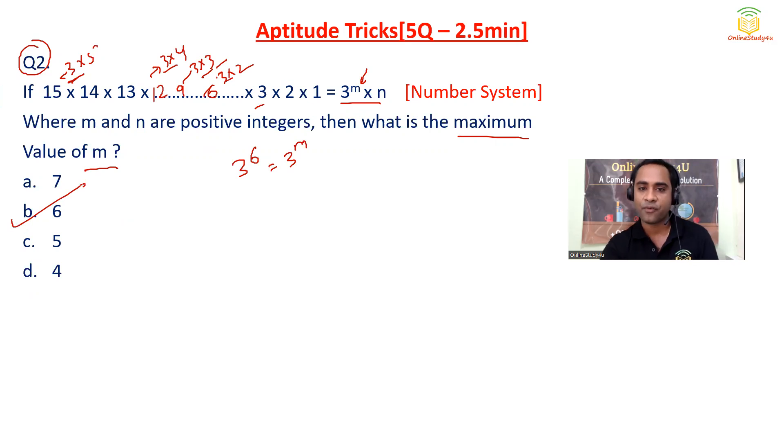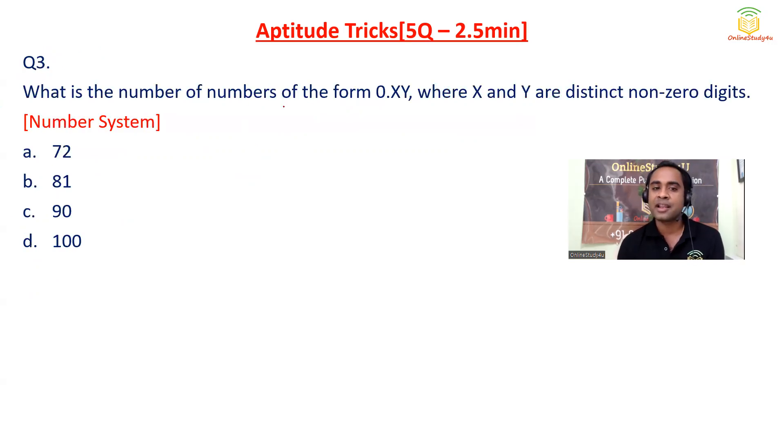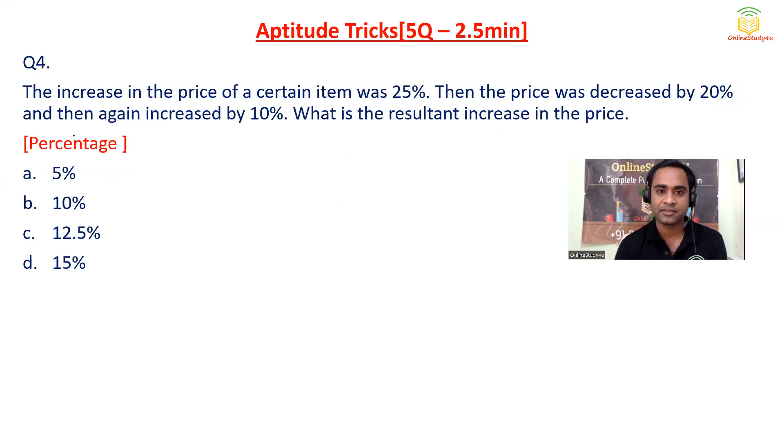For question number 3: What is the number of numbers of the form 0.XY, where X and Y are distinct non-zero digits? So X and Y, they have given two conditions. X and Y are non-zero digits and they would be distinct. So how many numbers we have? 1 to 9. So I have removed 0, so 9 digits. Now, first place we have 9 choices. I am using permutations and combinations. And second place we will be having only 8 choices. Why? Because if you are putting 5 here, here we cannot do because they are distinct. So 72. Option A will be the correct answer.